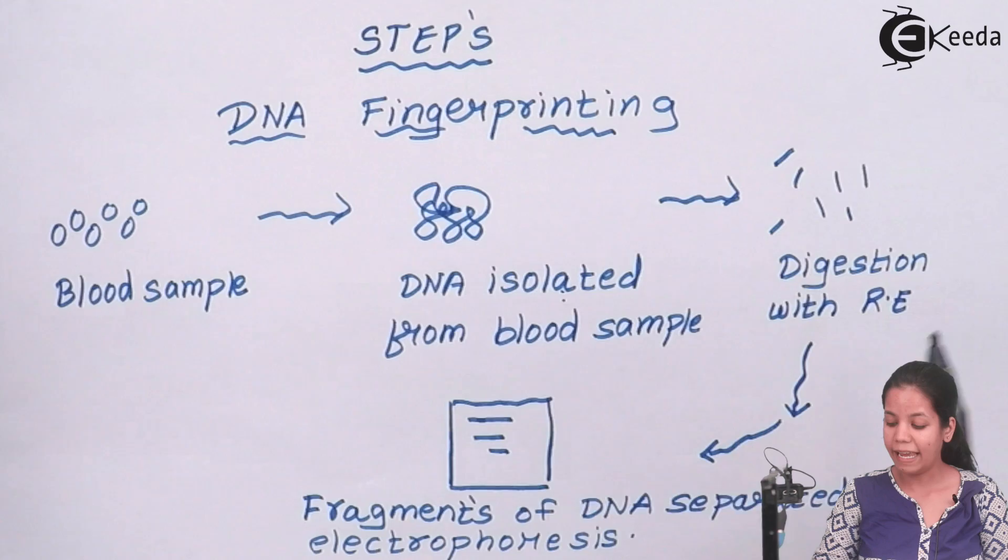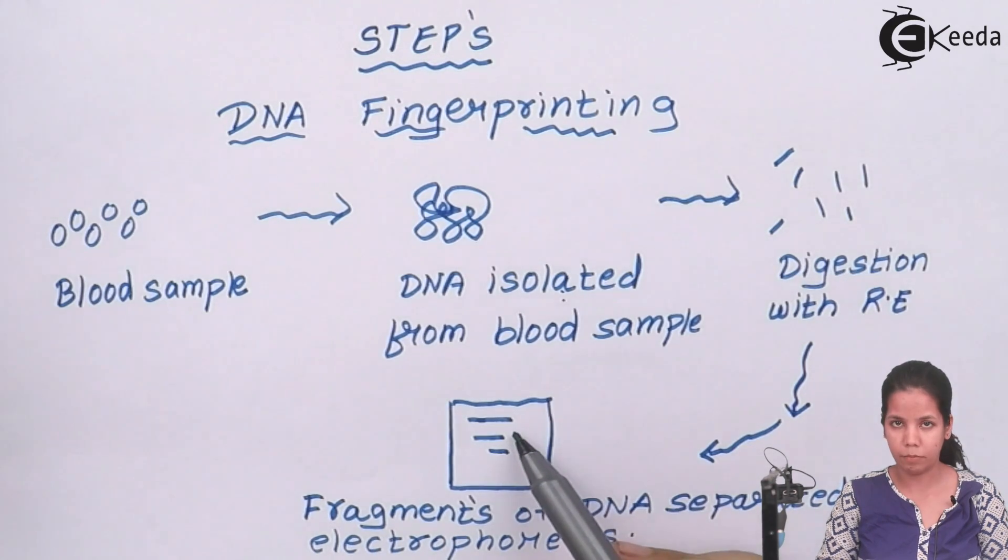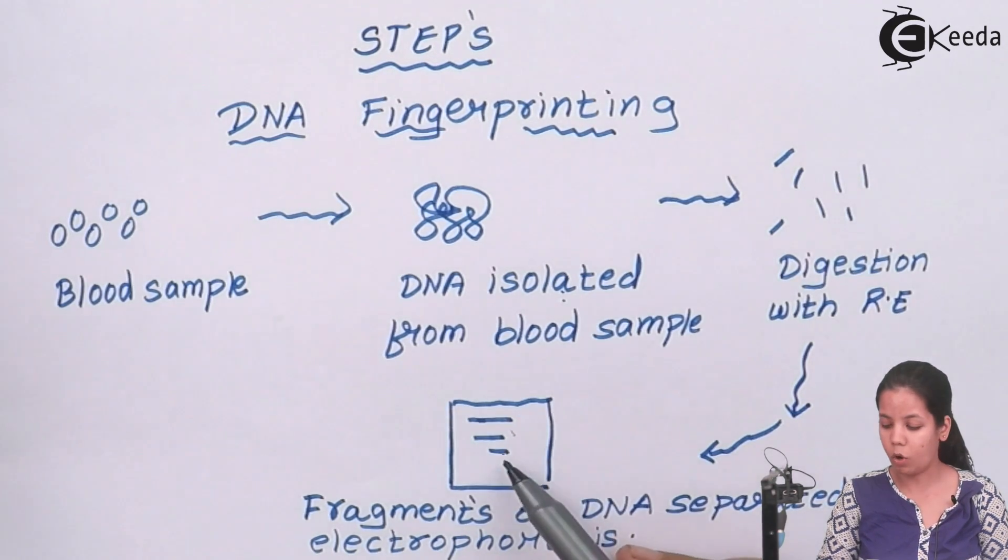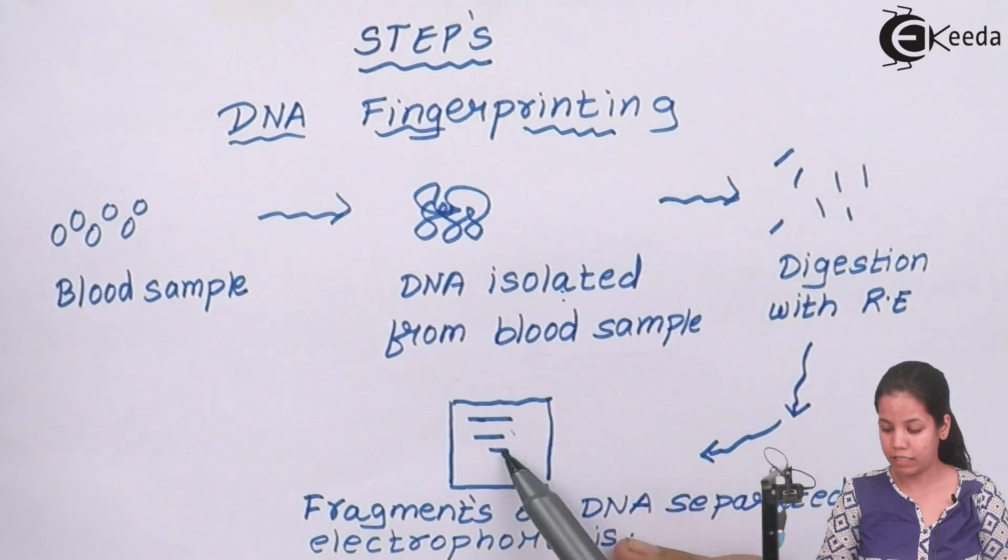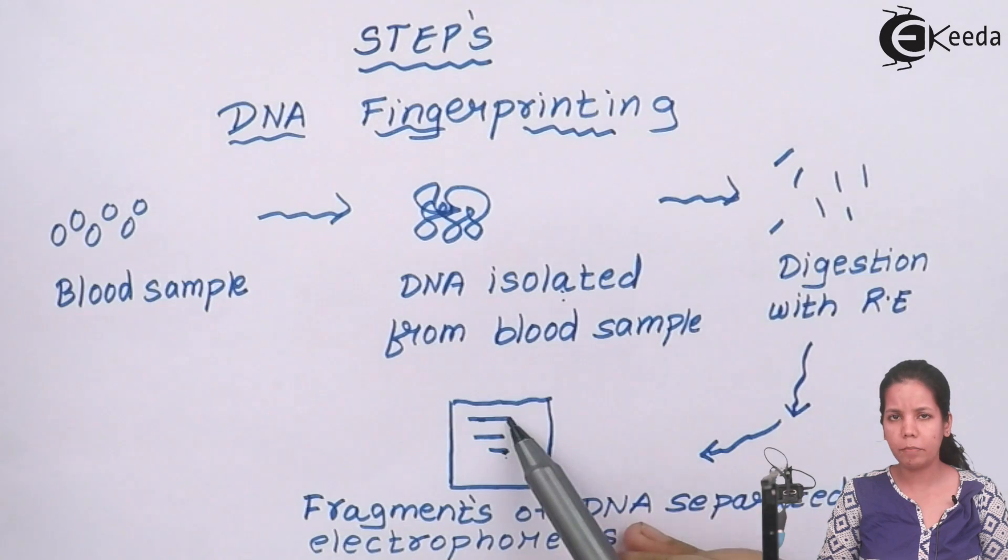Now this cleaved DNA is put on an electrophoresis machine and the DNA separates according to their size. The smaller fragment is the fastest while the larger fragment is behind.